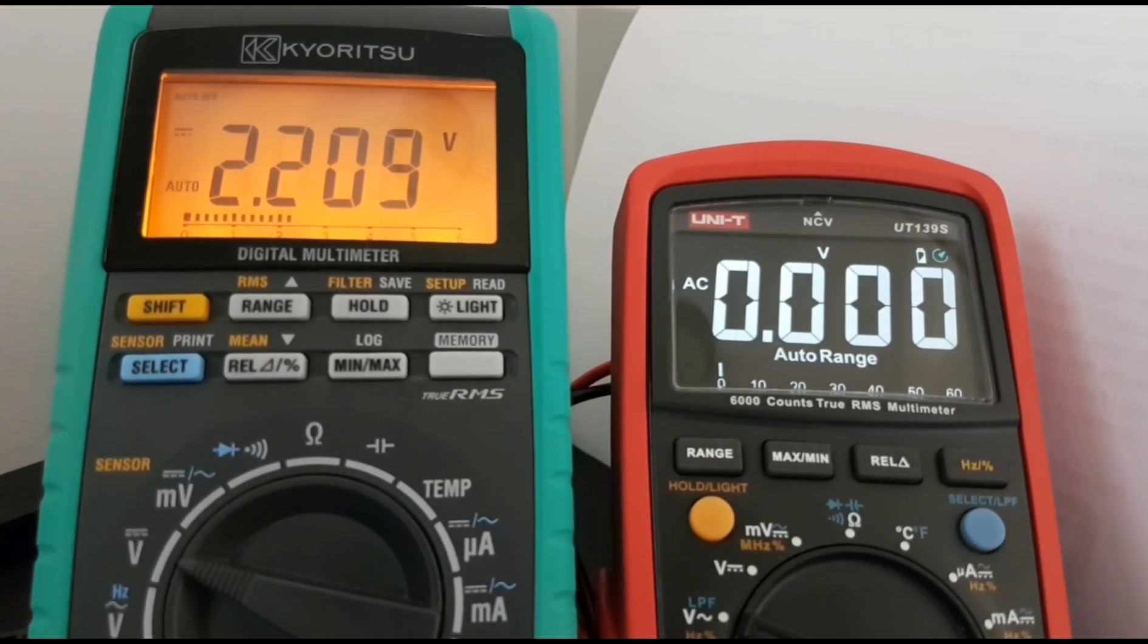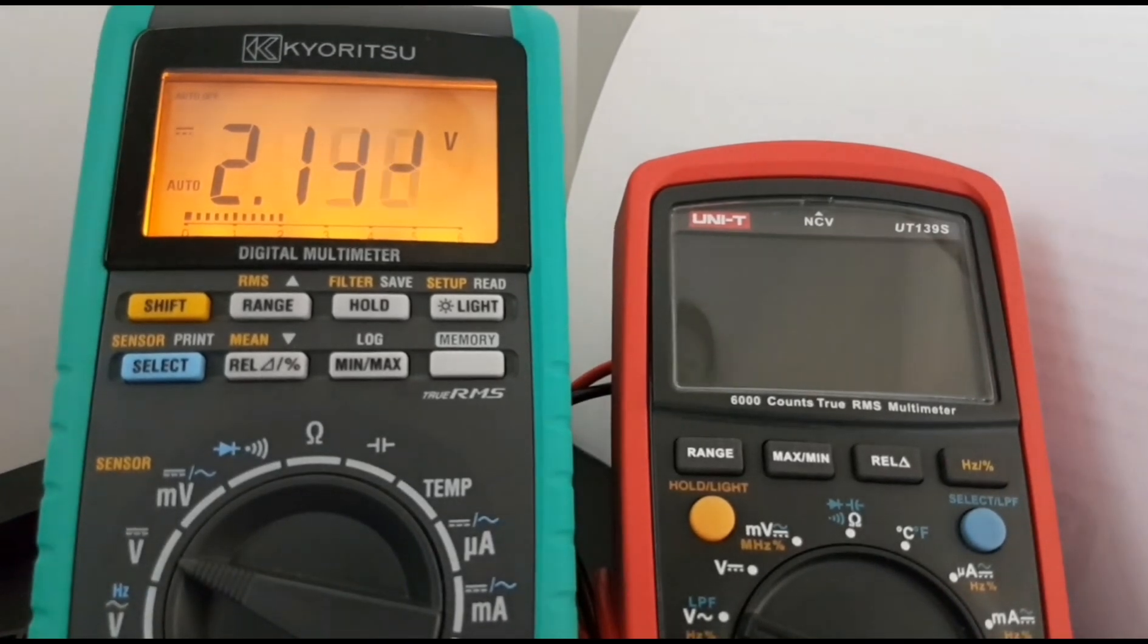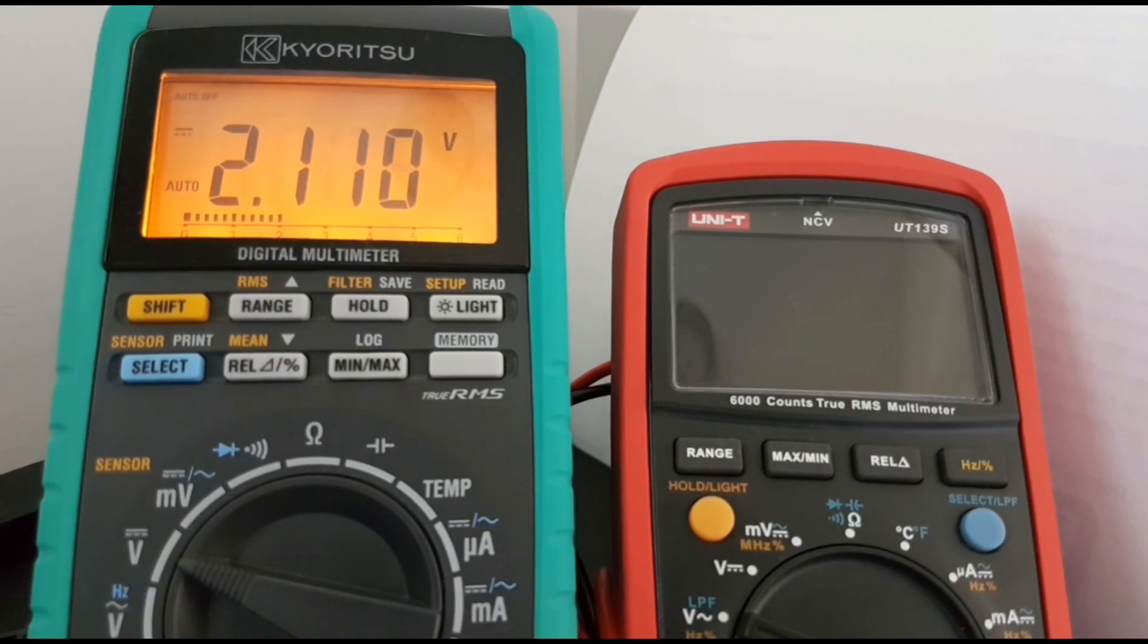2.1 volts—okay. And there we go. So cutoff was around 2.1 volts. Definitely more longevity, more life if you have the backlight disabled on the 139S.